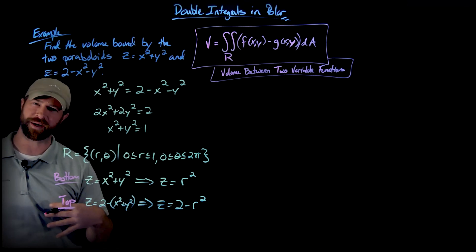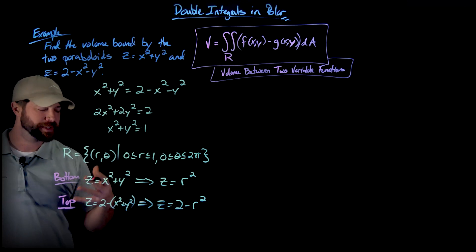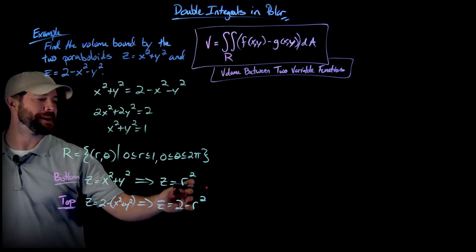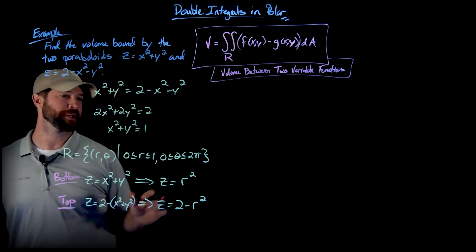But what I need to do is now take this minus this in my formula. We have our region described. We know that our dA in polar coordinates is r dr d theta. And so we actually have everything that we need.